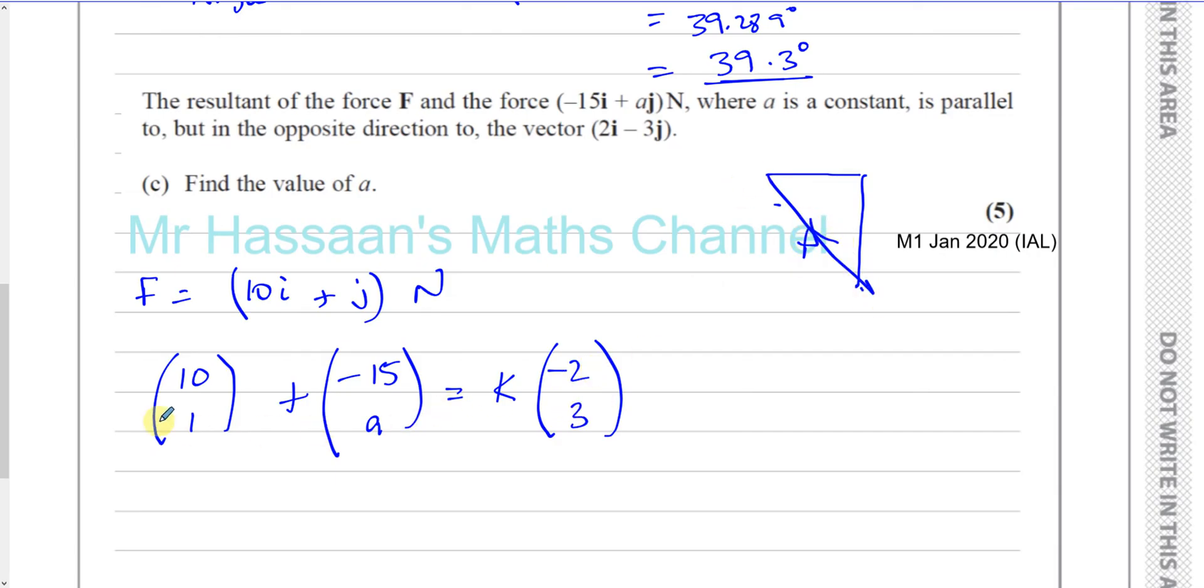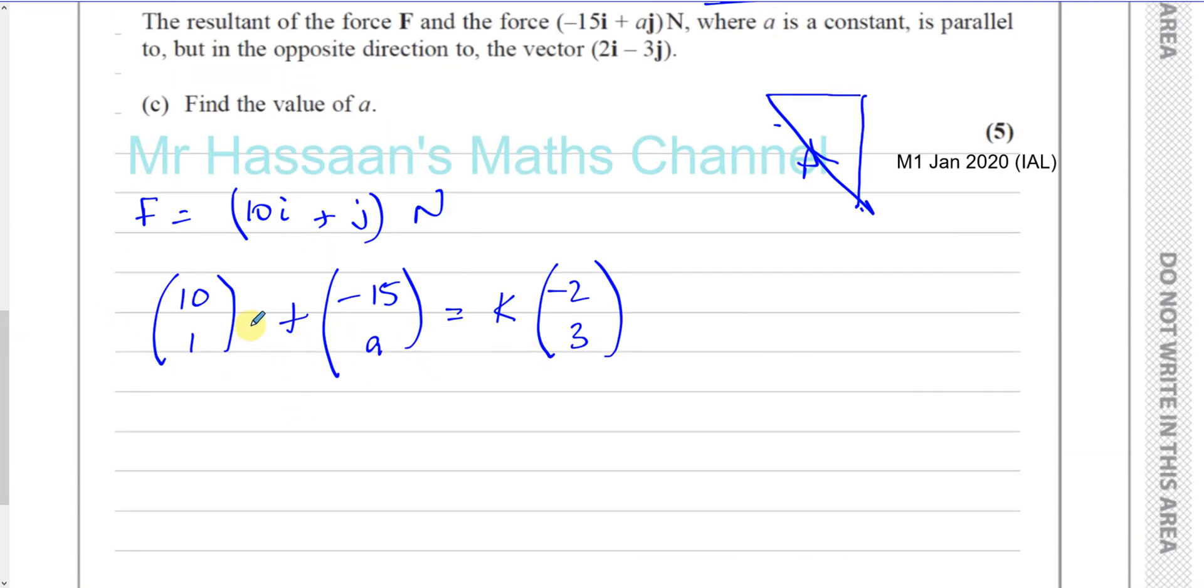Okay, so the resultant of these two forces gives us the resultant vector which is parallel to this vector. So it's a constant or multiple of the opposite direction of this vector. So now I can form a pair of equations and solve to find what A is. So, I've got 10 minus 15 is equal to minus 2K. And I have 1 plus A is equal to 3 times K.